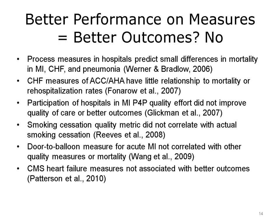Unfortunately, the story does not end there. Other studies have produced negative findings. One, for example, found that across various quality process measures, hospitals could predict only small differences in mortality from MI, CHF, and pneumonia. Another study found that the measures for quality of care of CHF developed by the American College of Cardiology and the American Heart Association have little relationship to mortality or re-hospitalization rates. Perhaps one of the most negative studies showed that hospitals that participated in a particular P4P quality effort didn't produce an improved quality of care, the hospitals didn't do any better in the quality measures, and none of the patients had better outcomes. In one, a smoking cessation quality metric didn't correlate with actual smoking cessation. In another, a door-to-balloon measure for acute MI didn't correlate with other quality measures or mortality. Finally, use of Centers for Medicare and Medicaid Services, CMS, heart failure measures has not been associated with better outcome.